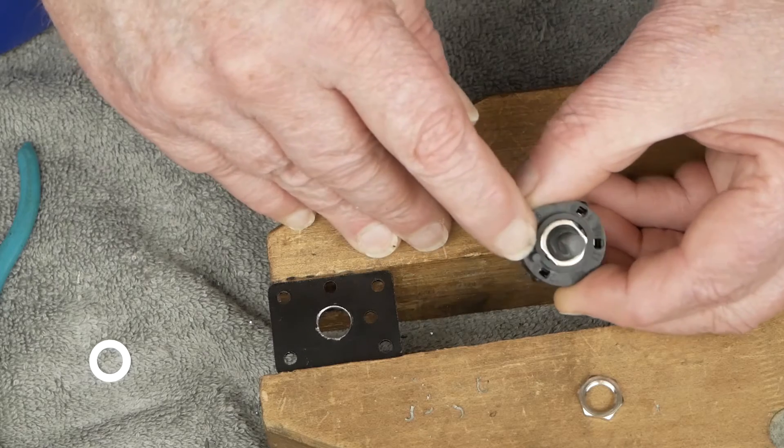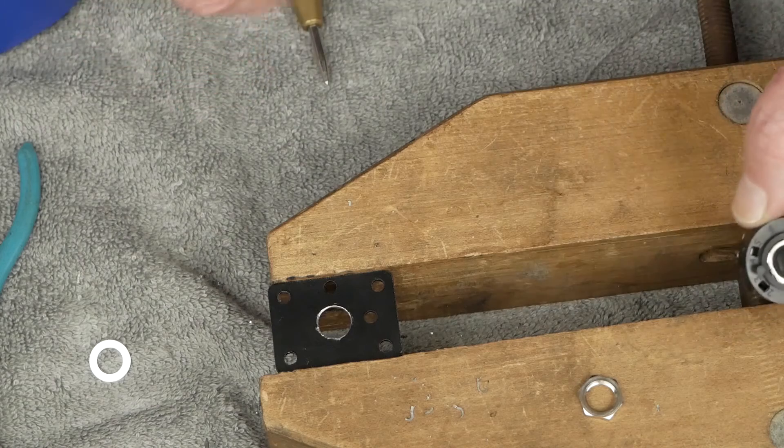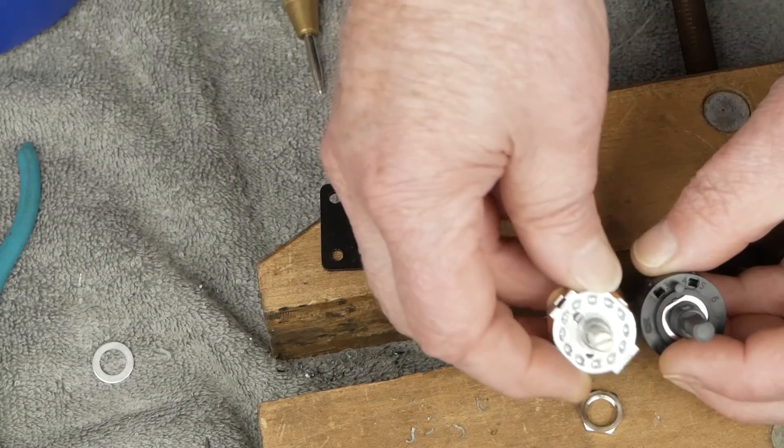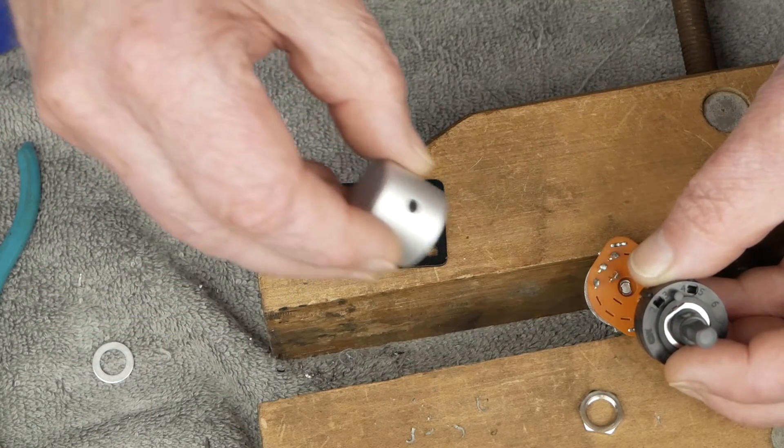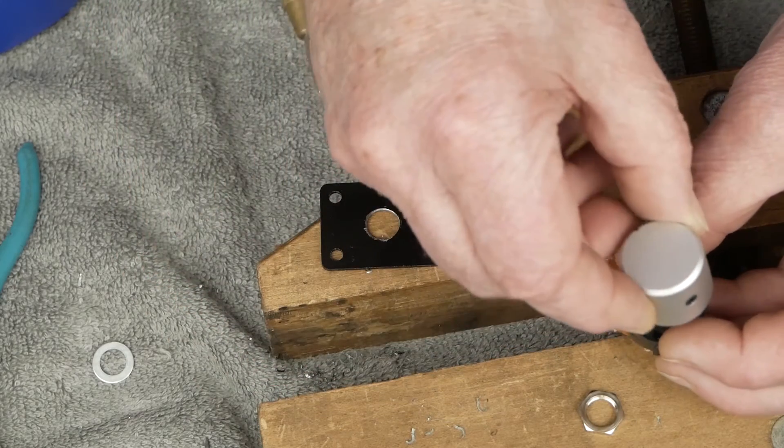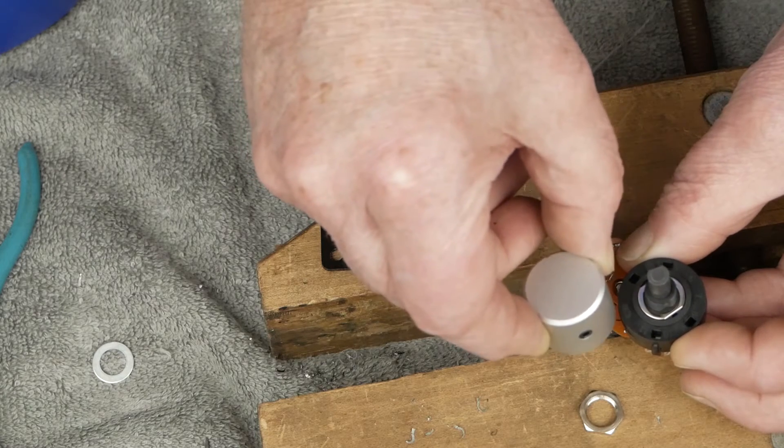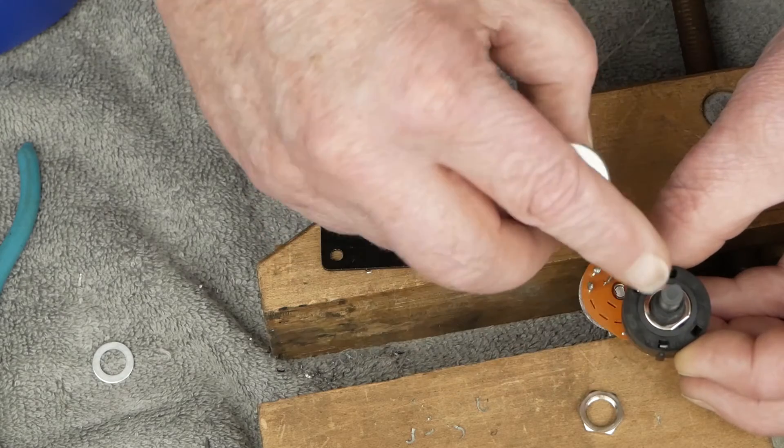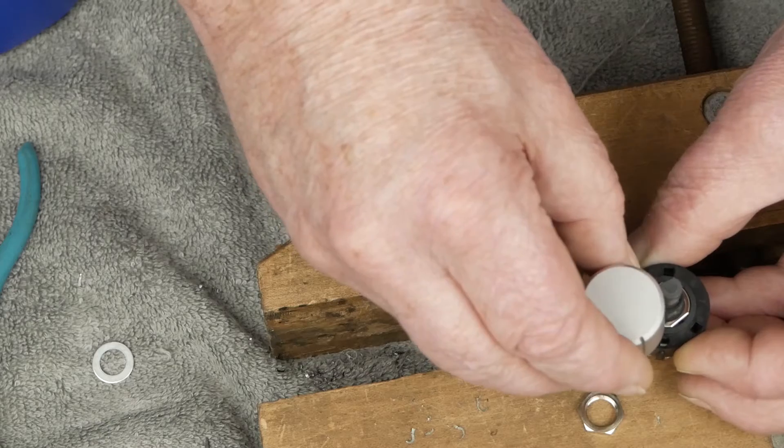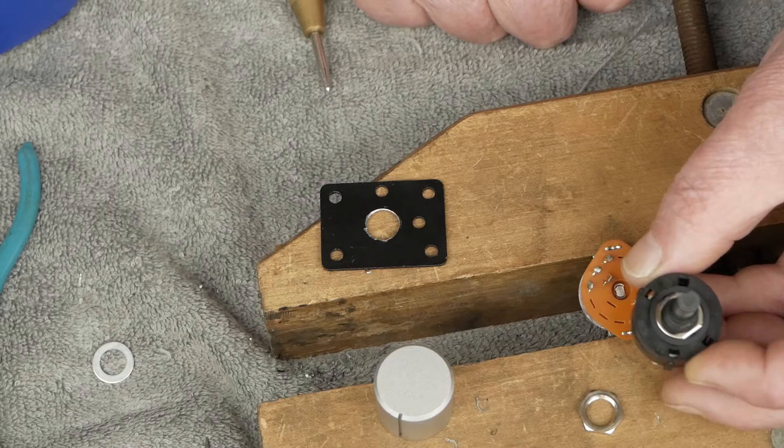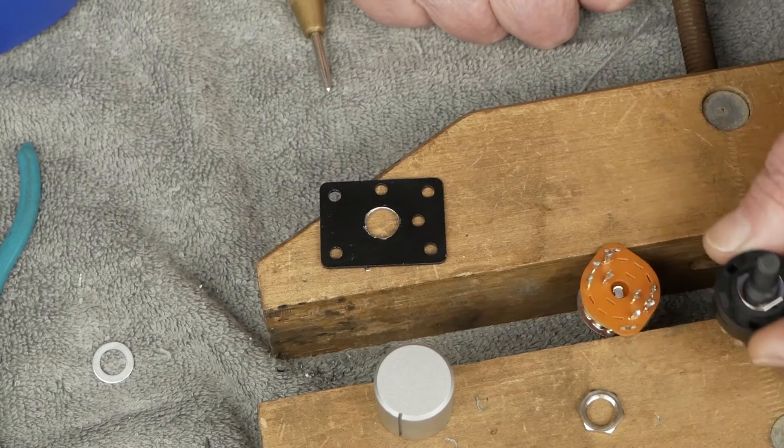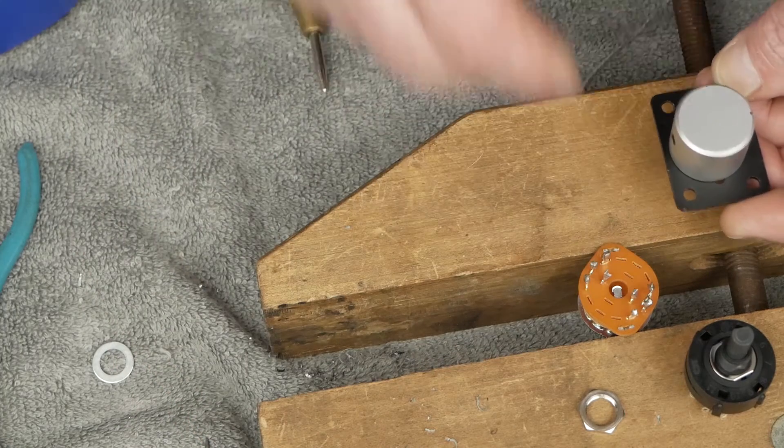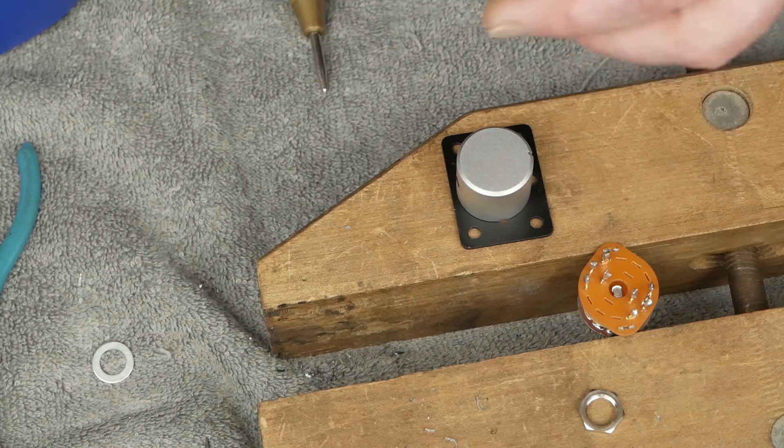So the next thing we have is this little indexing pin and we need to drill the hole in this plate for that indexing pin. Because this is a D-shaped shaft instead of being round and our knob has this set screw to have some adjustability, we want to make sure that the set screw goes on opposite the D, and that way it'll be pulling the knob over.